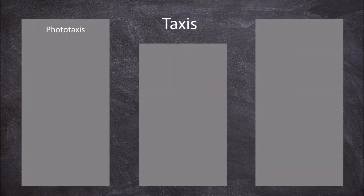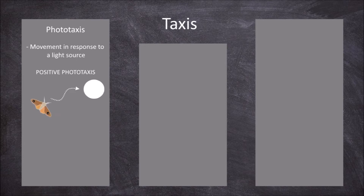Phototaxis is the innate directional movement of an organism in response to light. Positive phototaxis is the movement towards a light source. An example of positive phototaxis is seen in moths and many other nocturnal insects that move towards the presence of white light.